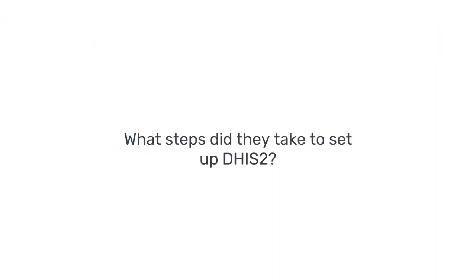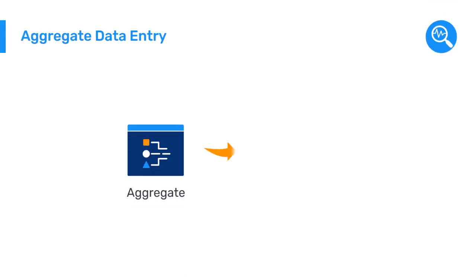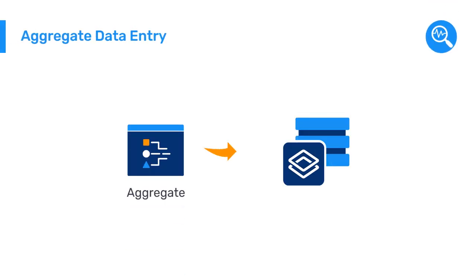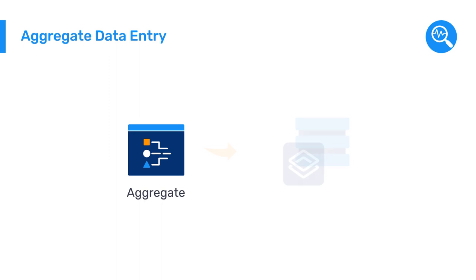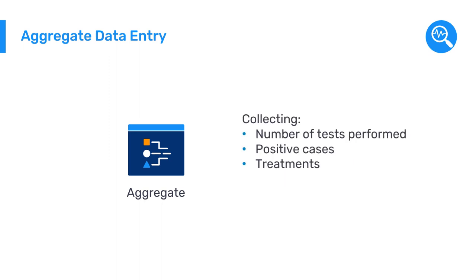What steps did they take to set up DHIS-2? First, they configured the aggregate data entry forms in DHIS-2 to look like the paper forms they were using before, collecting the same data points — such as number of tests performed, positive cases, treatments, and deaths — at the same monthly frequency.